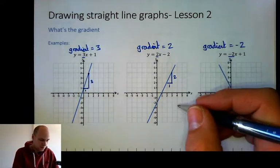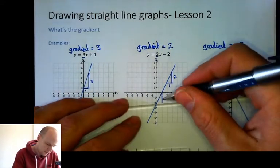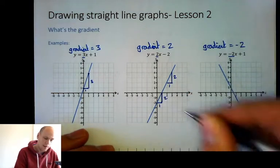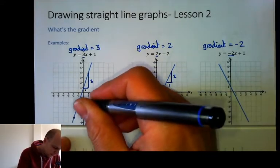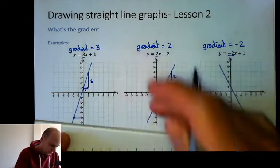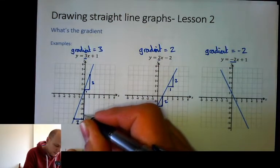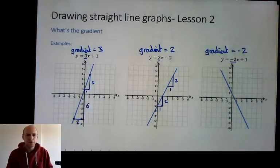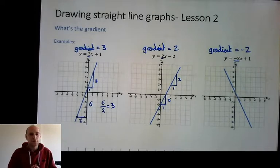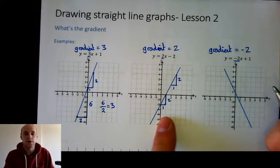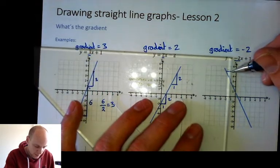It actually shouldn't matter where you take your measurements from. If you go further down, you'll notice that it's still going to have a gradient of two no matter where you are on the line — one across, two up, gradient of two. It also doesn't matter if you wanted to use a bigger triangle. On this one, if you wanted to use this triangle here, it would also give you a gradient of three. That's because you go two across and six up. Six divided by two is three.